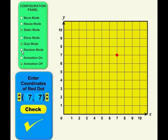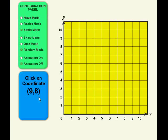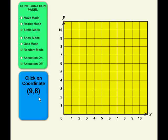The next mode we have is random mode in which a random coordinate pair is chosen, as you can see here, and the object is to choose the associated point on the coordinate grid.